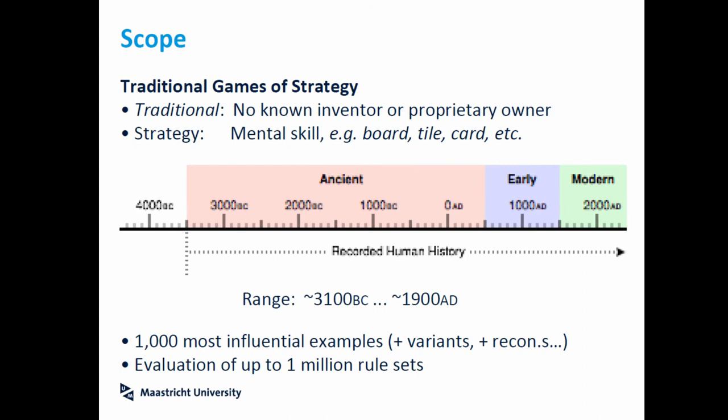The scope of this project is focused mainly on traditional strategy games. We define 'traditional' as a game with no inventor or property owner, and 'strategy' as a game with a mental style — so, for example, board games, tile games, or card games. We are covering games between 3100 BC — the estimated date for Senet, the oldest game — to almost the year 1900. We speak about the 1,000 most different examples, but you can also work with variants or reconstructions built by our project. We estimate we have to evaluate something like 1,000,000 rulesets, which is only possible with artificial intelligence.